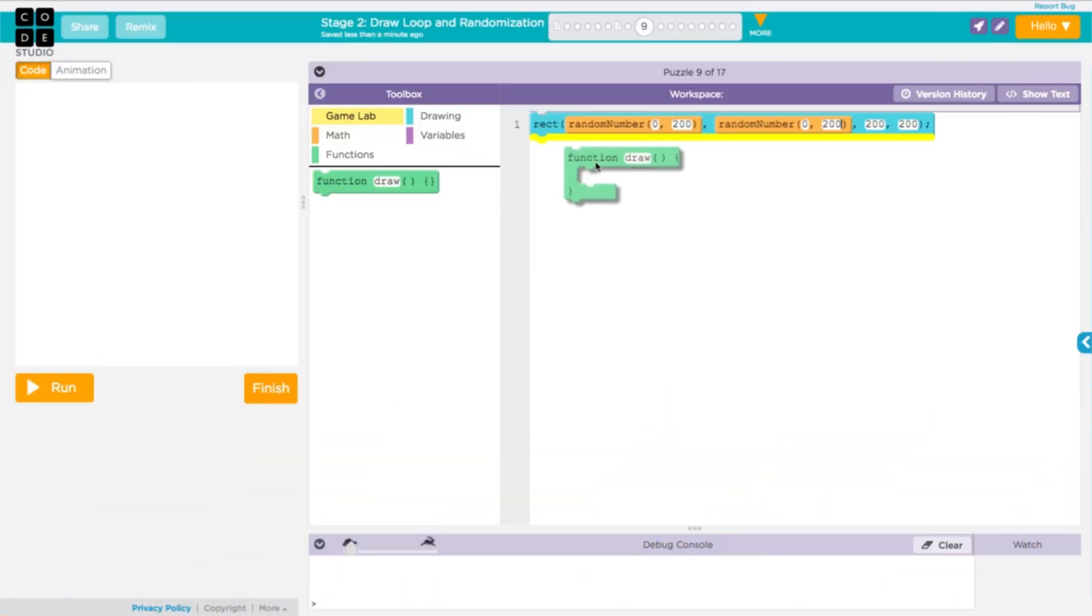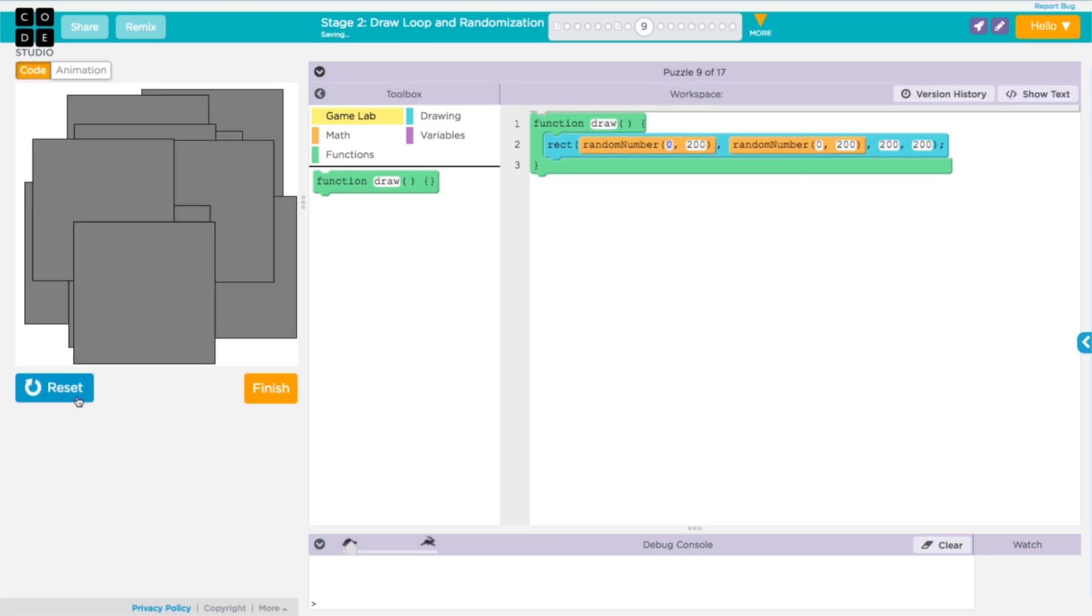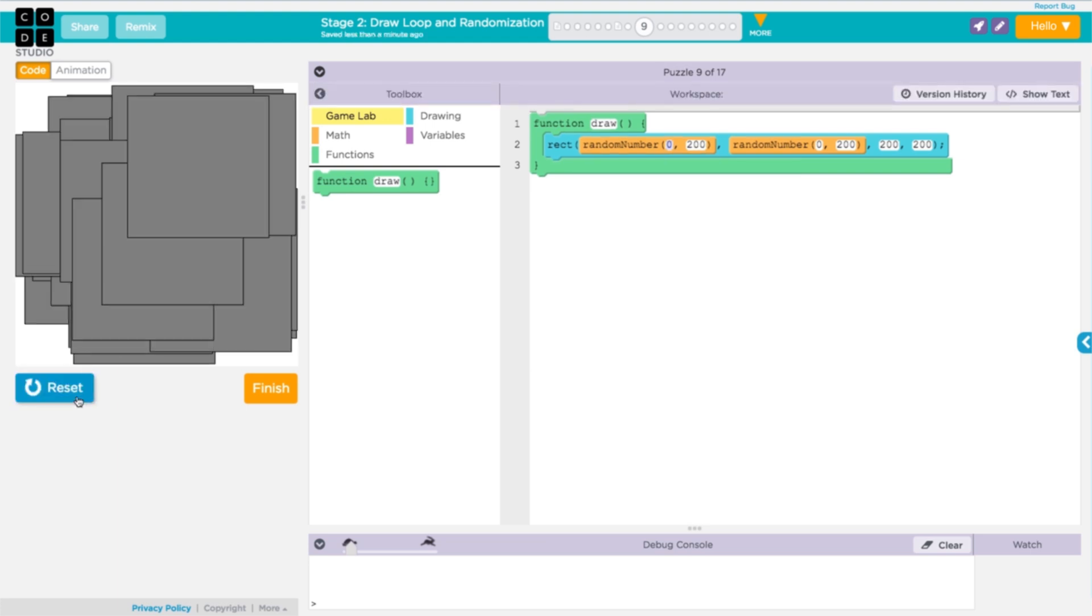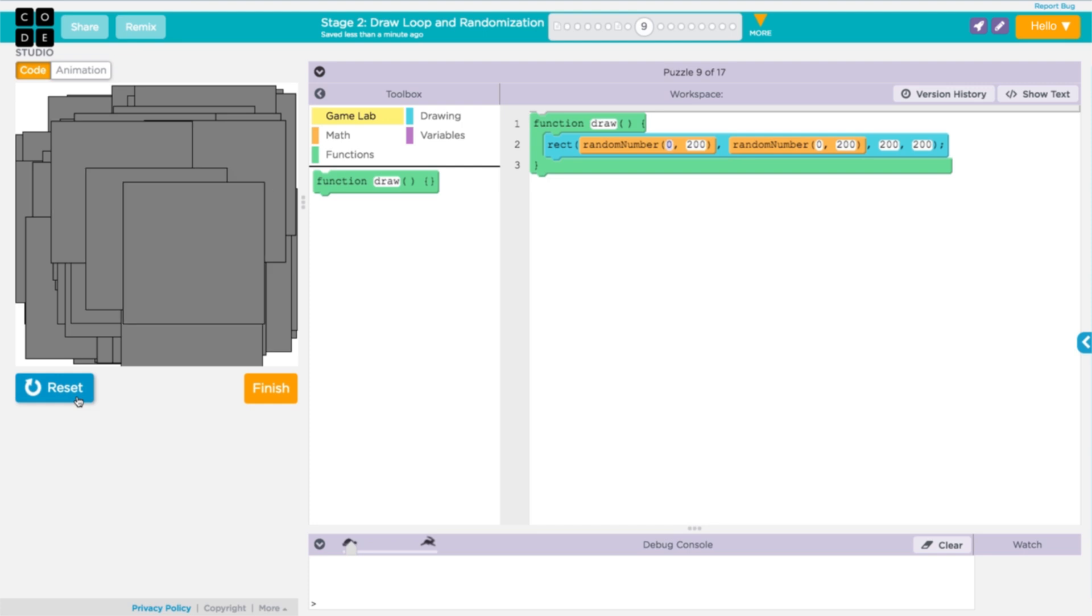Let's move our rectangle inside the draw loop and see what happens. Whoa, so many rectangles! We can see that a rectangle isn't just being drawn once anymore.